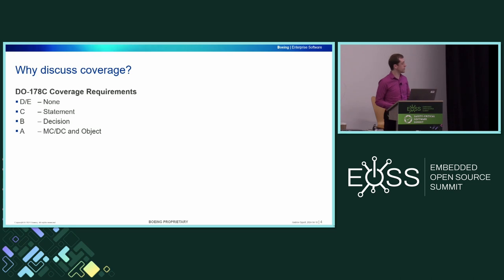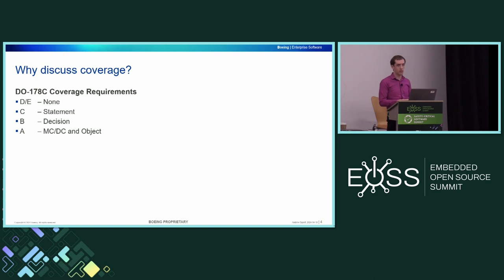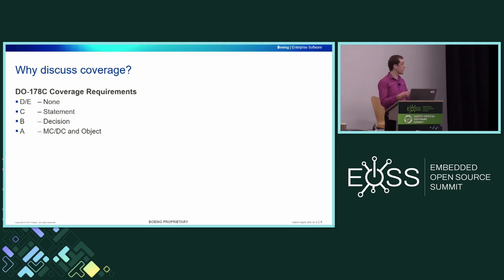Why discuss coverage at all? Well, depending on the level you're developing your software at for DO-178C, there are a number of coverage requirements. At DAL D and E — the less safety-critical ones — there are no coverage requirements at all. However, when we get into DAL A, B, and C, which is often called safety-critical software, requirements are added. For DAL C, you need statement coverage. For DAL B, you need both statement and decision — it's additive. And for DAL A, you need statement, decision, MCDC, and object coverage. I'll go into detail about what those different types of coverage actually are on the following slides.